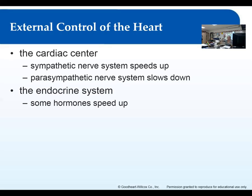Baroreceptors — B-A-R-O-R-E-C-E-P-T-O-R-S — are pressure receptors, kind of like nervous cells that sense pressure, similar to pressure receptors in your skin. These are located in the atrium and the aortic arch — the part of the aorta that curves around — and also in the carotid arteries, the big arteries in your neck where you can feel your pulse. These help monitor blood pressure.